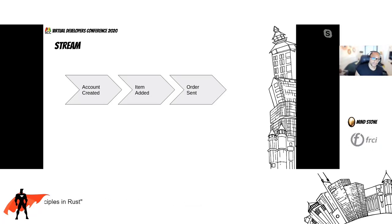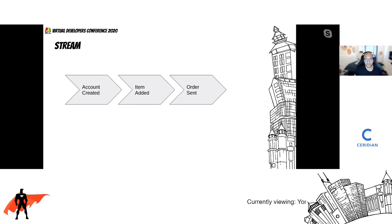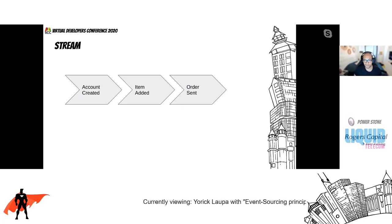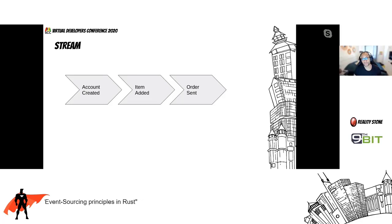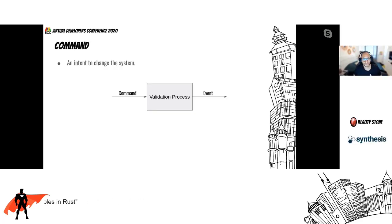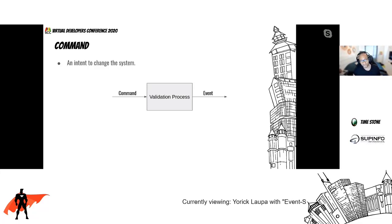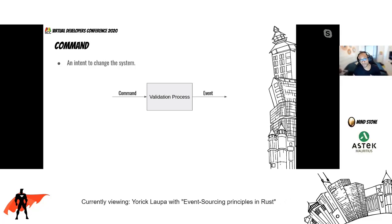We saw what an event is — it's a fact in a system. A stream is a set of events. Now we'll see their sibling, which are commands. Commands are very similar to events in the sense that they share basically the same payload. But the main difference is events are about the intent to change the system. Commands go through a validation process, and when they pass that process, they are promoted into an event. So the difference is purely semantic: a command is the intention to change something; an event is the proof that something has changed.